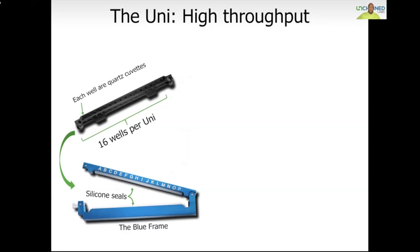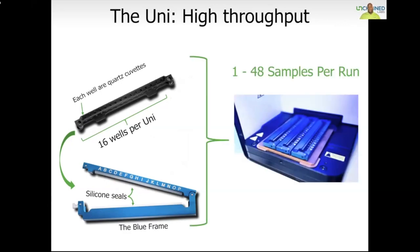Up to three Unis can be run at once, giving you a scalable throughput of up to 48 samples per run, which is considerably higher than traditional Tm-measuring platforms. Since the sample holder is completely sealed, users routinely load their samples and stress them outside of the instrument — using an oven to heat them up, or by doing freeze-thaw cycles — and then periodically return to the UNCLE to measure stability using the exact same samples with which they began the experiment. That is something only possible using the UNCLE platform.